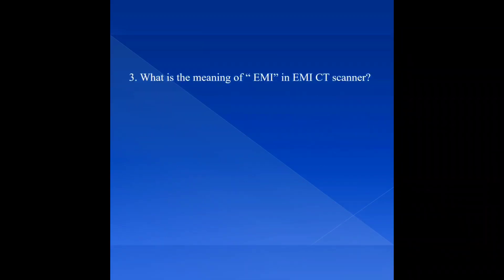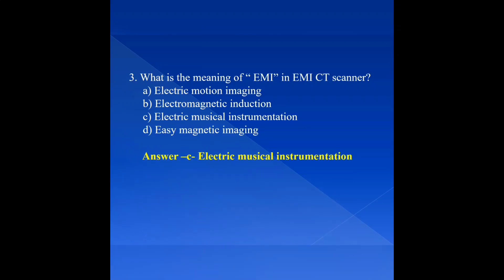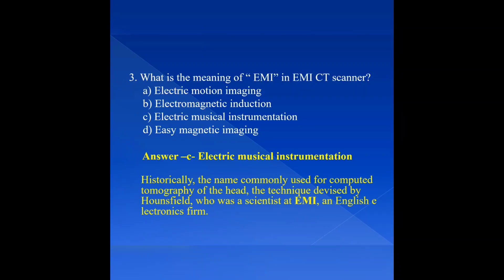Question 3: What is the meaning of EMI in the EMI CT scanner? Option A: Electric Motion Imaging, Option B: Electromagnetic Induction, Option C: Electric Musical Instrumentation, Option D: Easy Magnetic Imaging. The answer is Option C: Electric Musical Instrumentation. Historically, the name commonly used for computed tomography of the head — the technique devised by Hounsfield, who was a scientist at EMI, an English electronics firm.